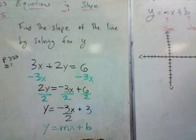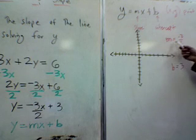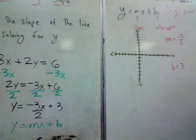In this case, the slope is m equal to negative 3 over 2, and the y-intercept is b equal to 3. We've got the slope equal to negative 3 over 2, and the y-intercept equal to 3.